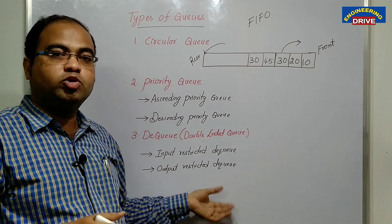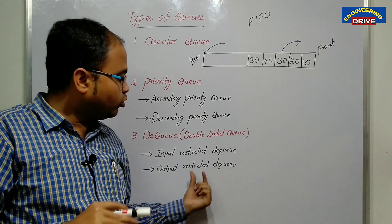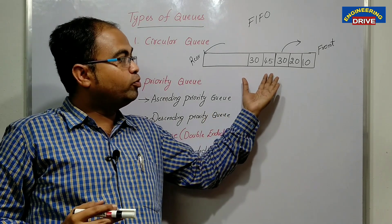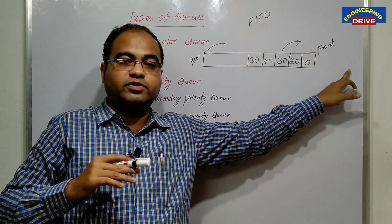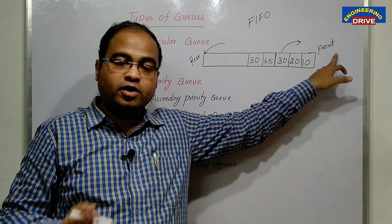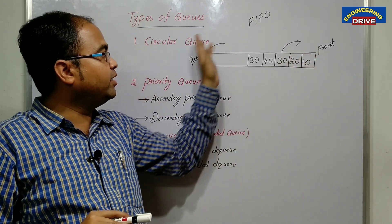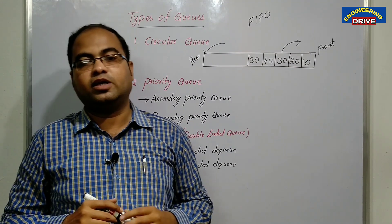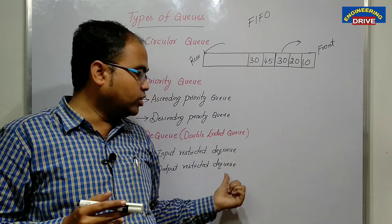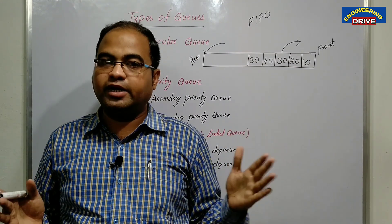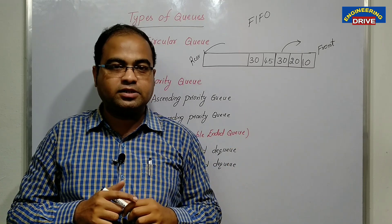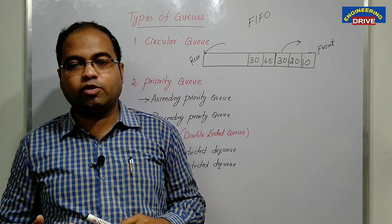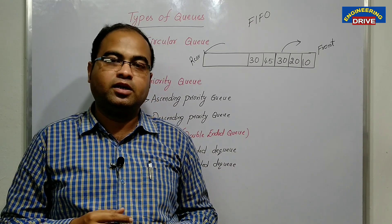Output restricted DQ is the opposite. Output means deletion of elements, and deletion is allowed only from one end — that is the front. Whereas insertion can be done either from rear or from front. So these are the two types of double ended queues: one keeps an input restriction, and the other keeps an output restriction.